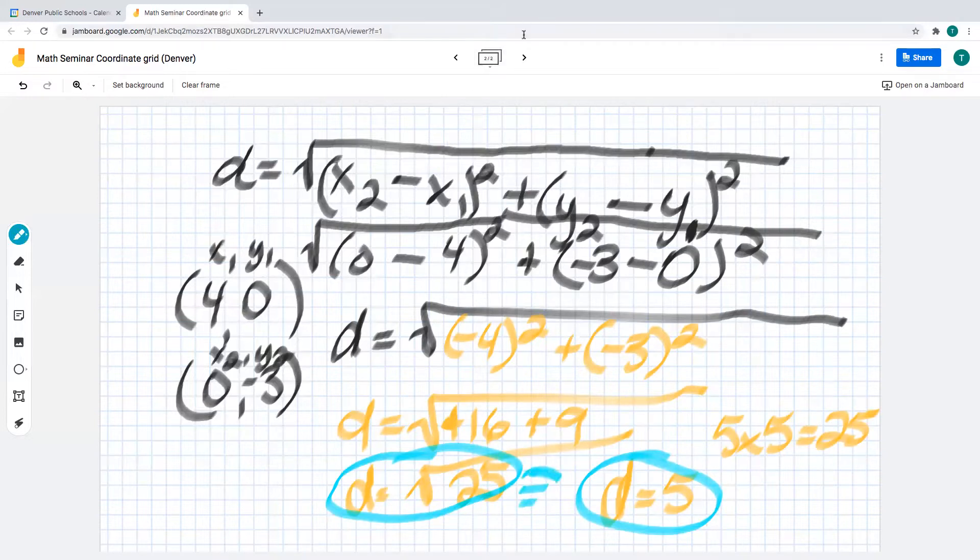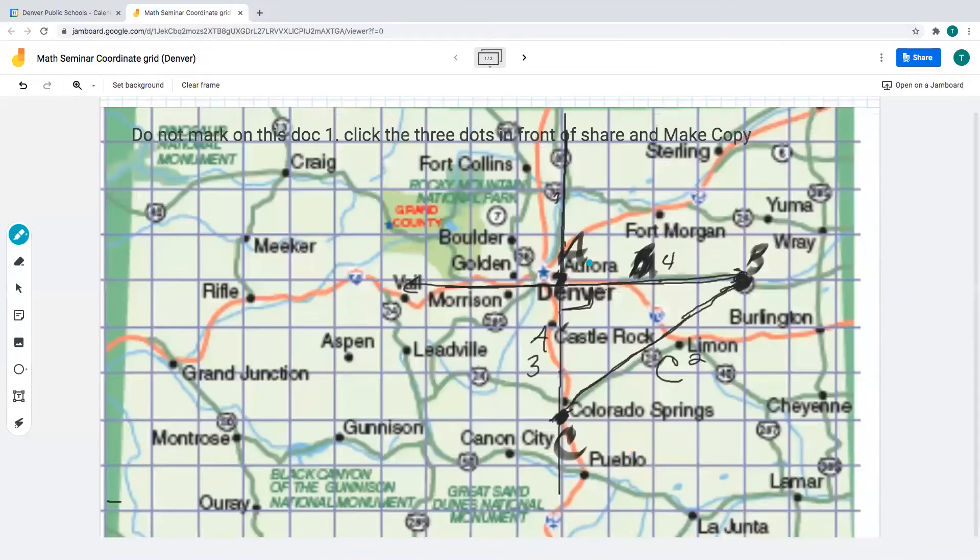All right, so hopefully that was helpful for you. You can actually check this if you like, you can do a squared plus b squared equals c squared, and you'll see that the length of c right here is 5. Hopefully that was helpful to you, you guys have a great rest of the day.